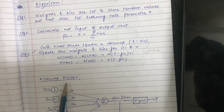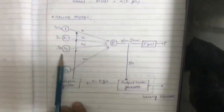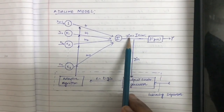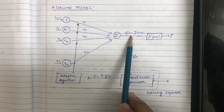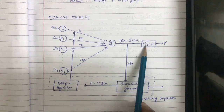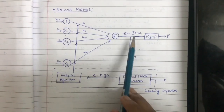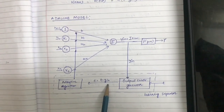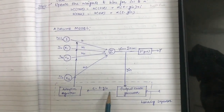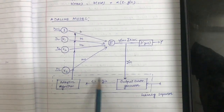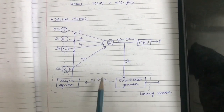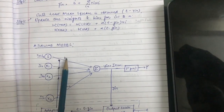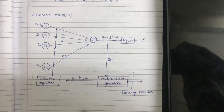Now let us discuss the ADALINE model. These are the input neurons and this is the output neuron. We calculate y_in, the net input to the output neuron, and then after applying the activation function we get some output. After calculating the y_in value, we check for e = t − y_in. If this has some numerical value, we repeat the process; if it comes out to be zero, the new weights will be the same as the old weights and we stop the process.